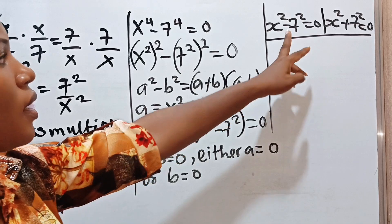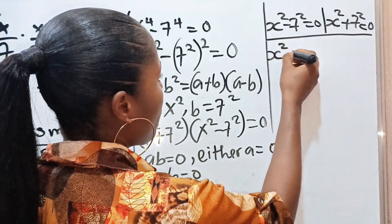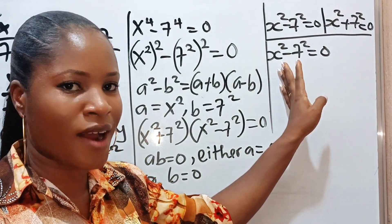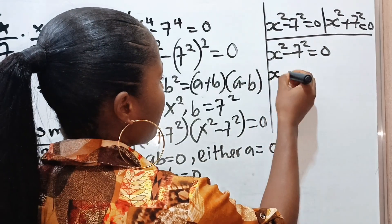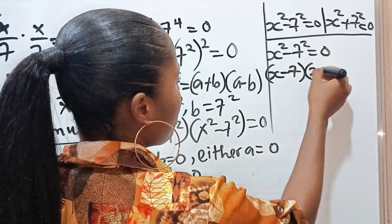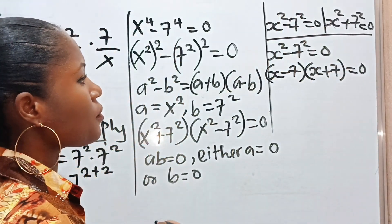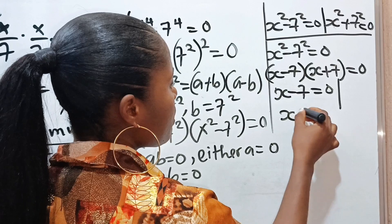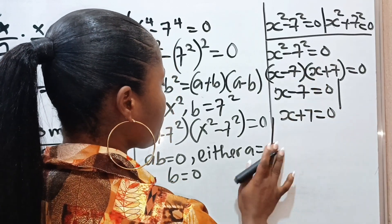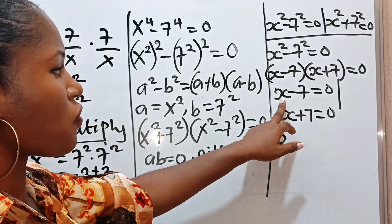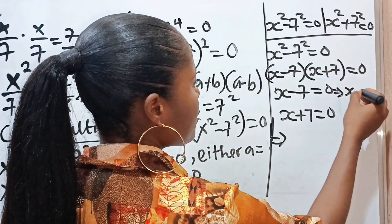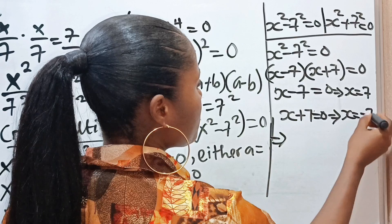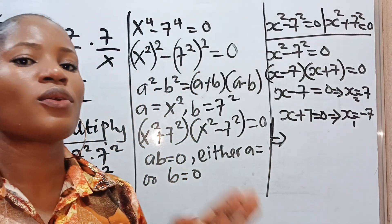Therefore, we can solve this as x squared minus 7 squared is equal to 0, or x squared plus 7 squared is equal to 0. Now let's solve the first case. Since x squared minus 7 squared is another difference of two squares, we can write it as x minus 7 multiplied by x plus 7 is equal to 0. So x minus 7 equals 0 or x plus 7 equals 0, which implies x equals 7 and x equals minus 7.